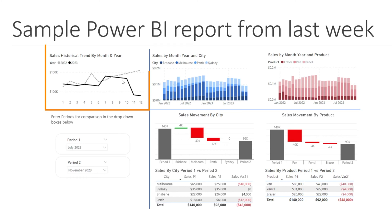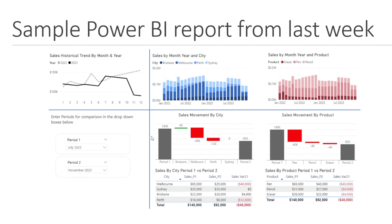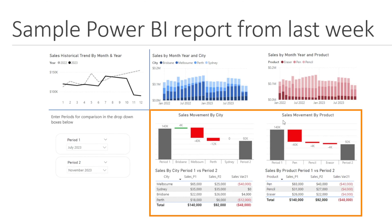This is a sales report. There is a sales trend chart in here, sales by city, sales by product across different time periods, and then the user can select two different periods — period one and period two. They can select the month, and on the right you get a waterfall that shows the sales movement from period one to period two by city as well as by product, and there is also a table underneath where you can see different sales by city across two different periods.